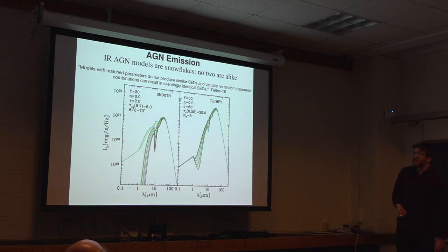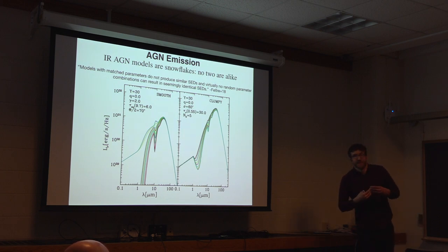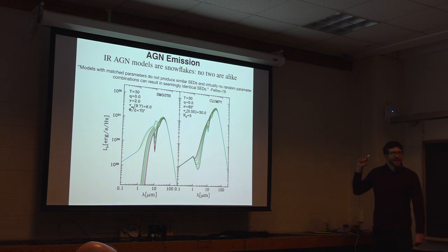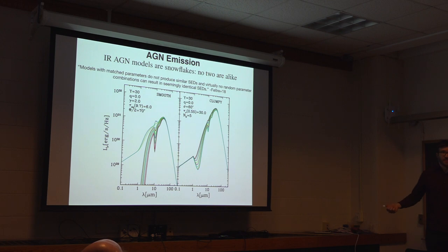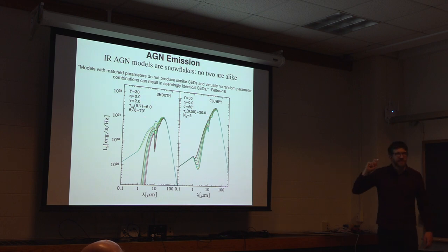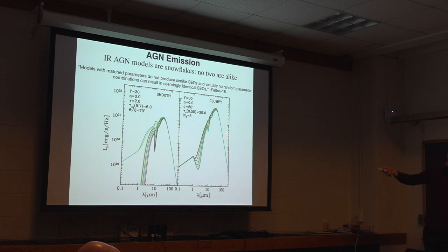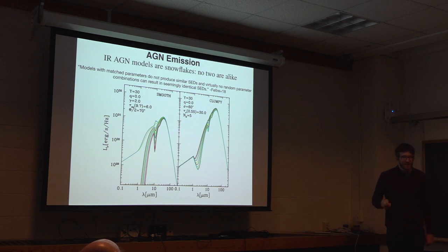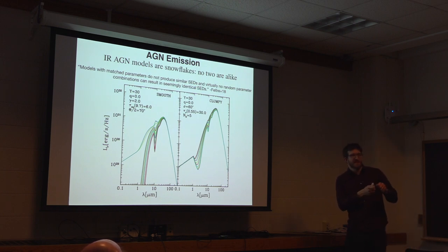The problem with these AGN models is they're all very different — they haven't really talked to each other very well yet. If you take the two most popular infrared AGN models, named Smooth and Clumpy, and put in the same match parameters and look at the outputs, they're very different. They have very different 10 micron features — Smooth has much steeper ones, Clumpy has very shallow ones. You also have a very different shape in the SED as a whole. Not only do the same parameters not give the same output SEDs, but there's no combination of random parameters that can create the same output SEDs when trying to match one to the other.